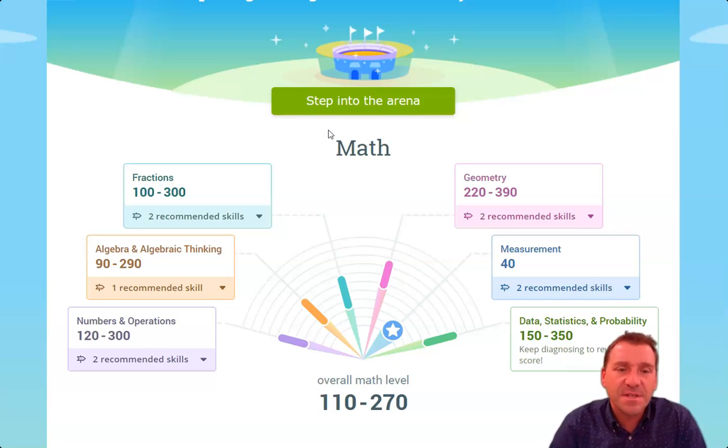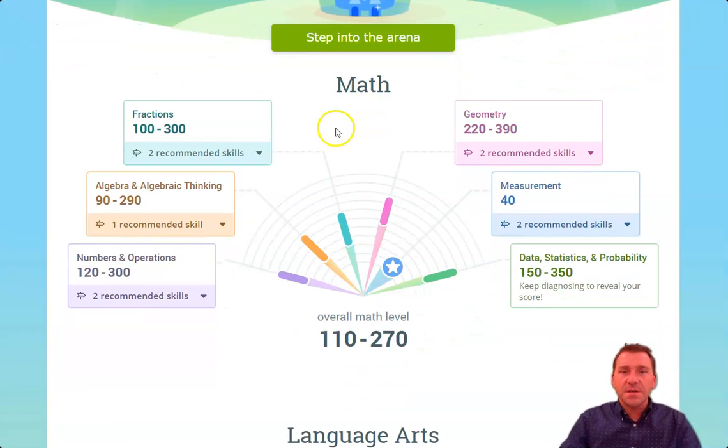Now, a couple of things to keep in mind. If you notice, each of these particular strands here has different recommended skills. The fractions has two, algebra and algebraic thinking has one. Yes, it is possible, as you see with data, statistics, and probability, there are no recommended skills at the moment.